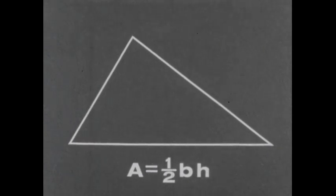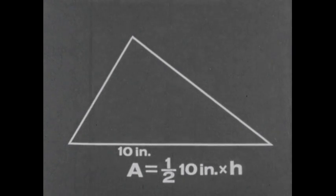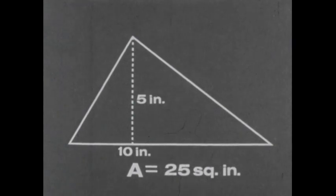If the original triangle has a base of 10 inches and a height of 5 inches, the triangle has an area of 25 square inches.